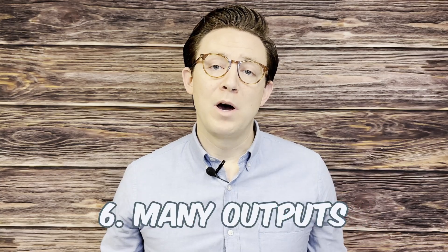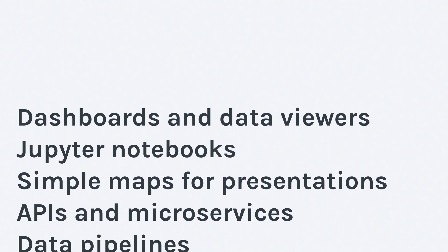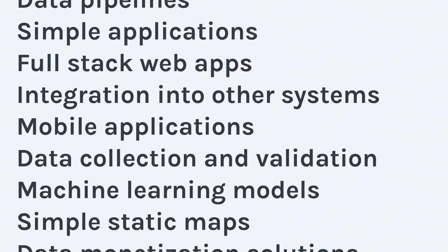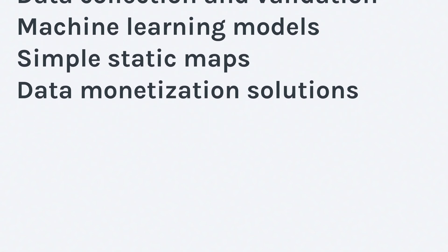The sixth and final point is that there is no single output of modern GIS. A deliverable can be just about anything. Here's a list of some of the things that I have seen created with modern GIS, and I'm sure there are many more. With more versatile and diverse outputs, modern GIS can serve and integrate into many more parts of your organization. I also want to take a minute to call out what isn't modern GIS. Simply saying that modern GIS is GIS on the web or connecting your data to a central cloud data store doesn't go far enough.